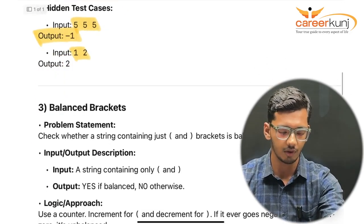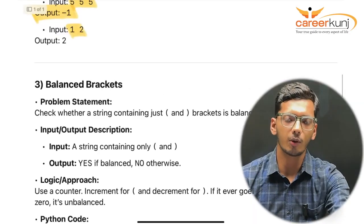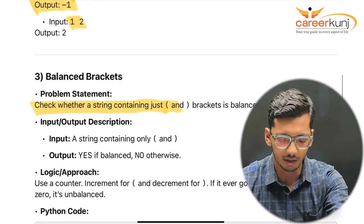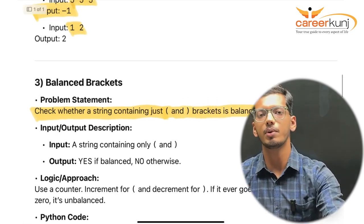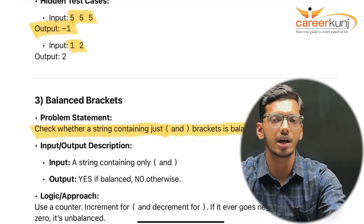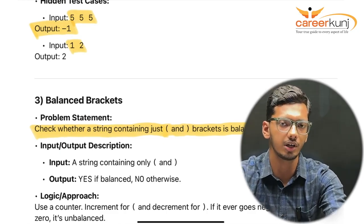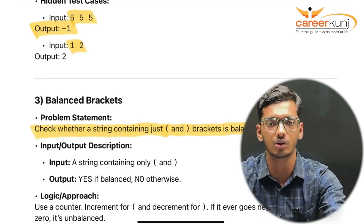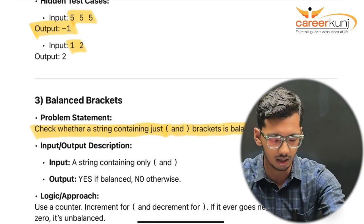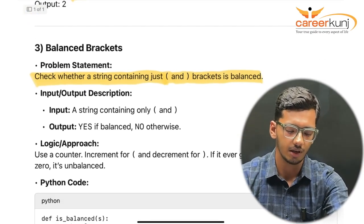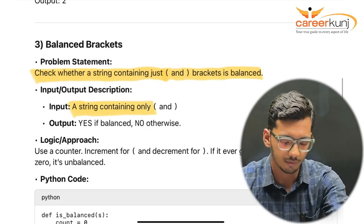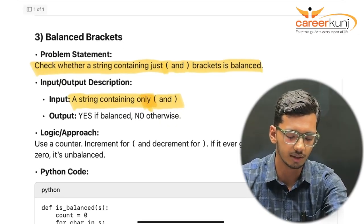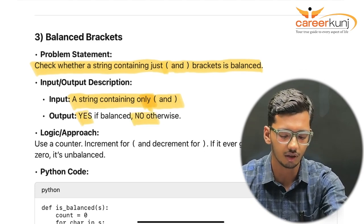Coming to the third question: balanced brackets. The problem is to check whether a string containing only opening and closing brackets is balanced. Balanced means if I have 2 opening brackets, I should also have 2 closing brackets. If the counts don't match, it is not balanced. The output is 'yes' if balanced, 'no' otherwise.